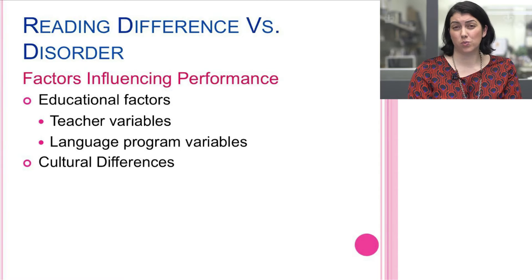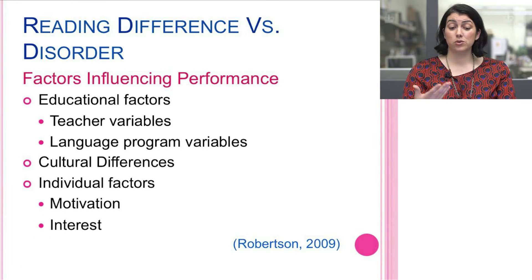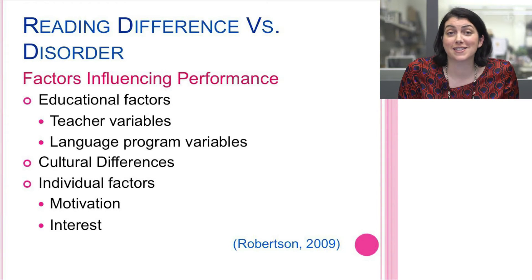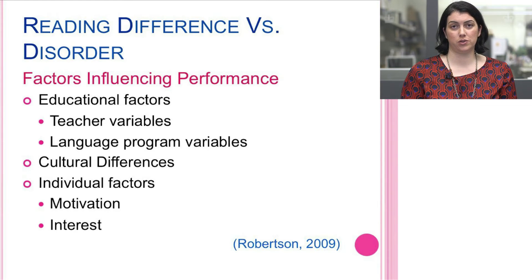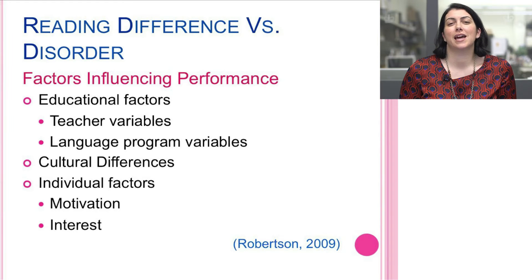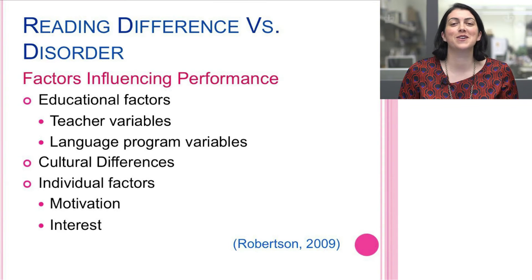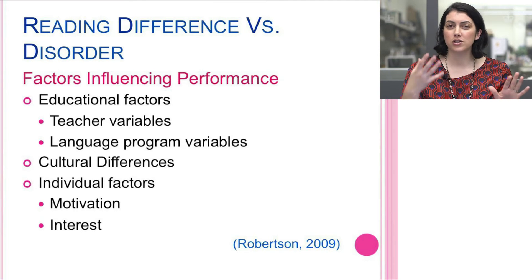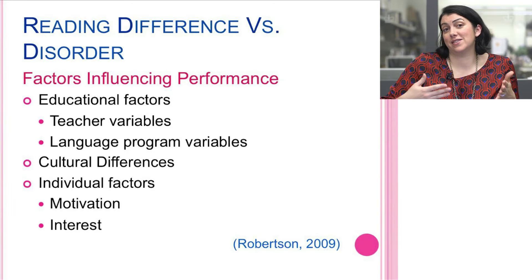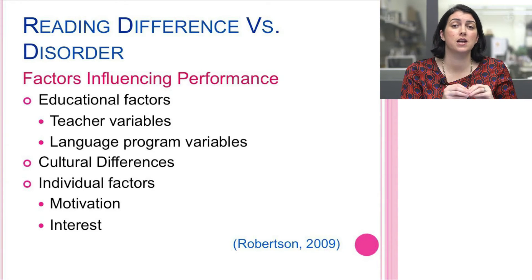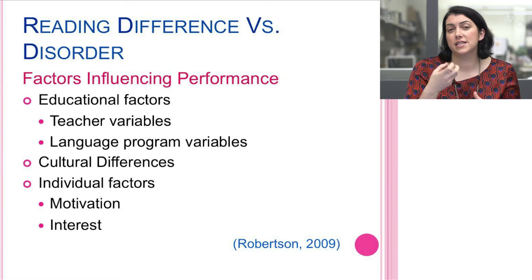We need to think about cultural differences as well as educational and individual factors. It's interesting to see how differently a child reads when they're reading a book of interest they've selected themselves. Think about what motivates your students and how we can get an authentic assessment — not just running records, but gathering all the information needed to say with confidence whether something needs more time, some Tier 2 intervention, or if there may really be a disability present.